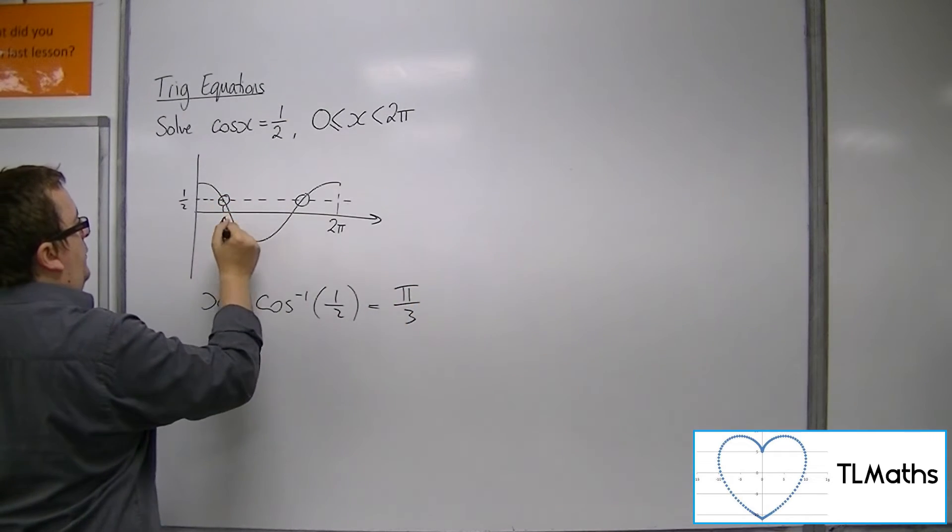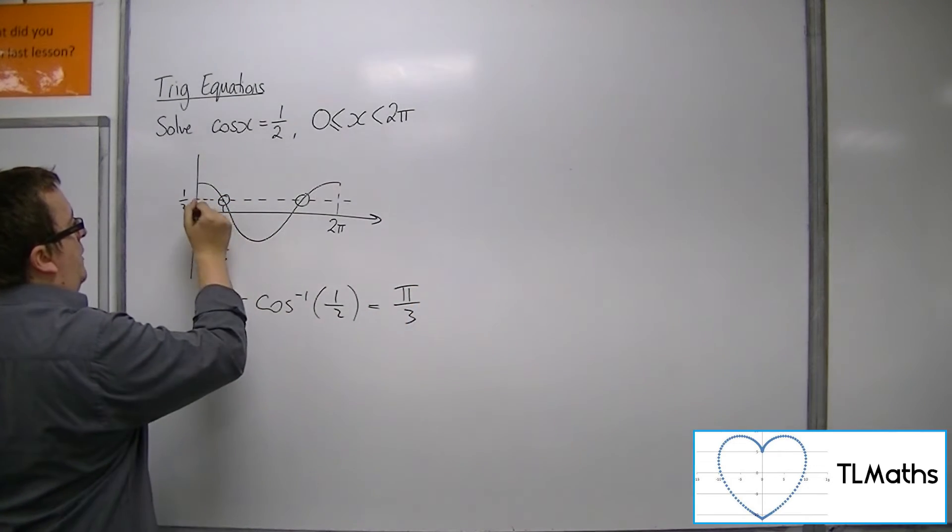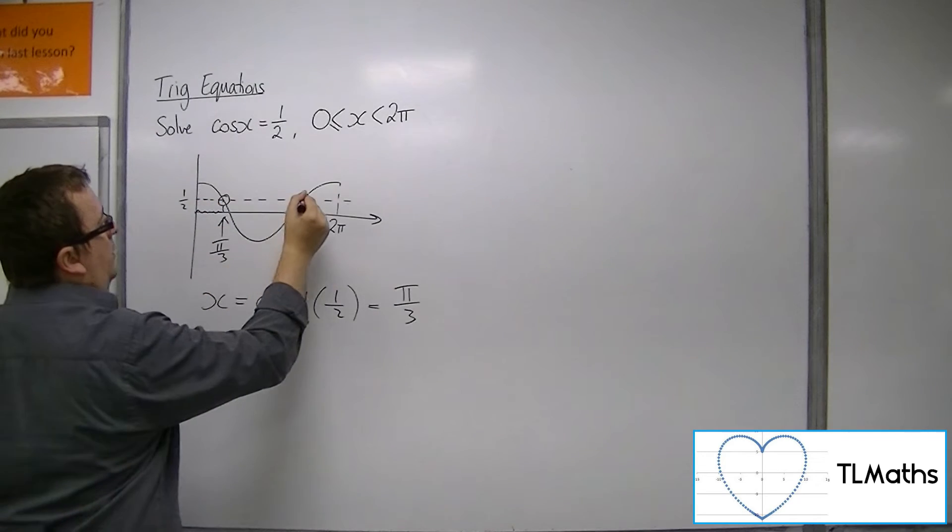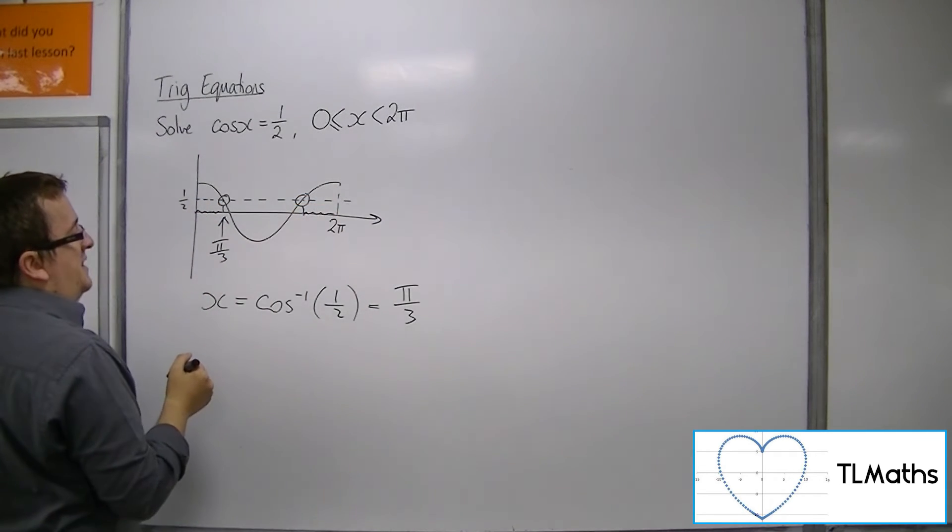So that is your first solution. Now if that is pi over 3 in distance, then so must that be pi over 3 in distance.